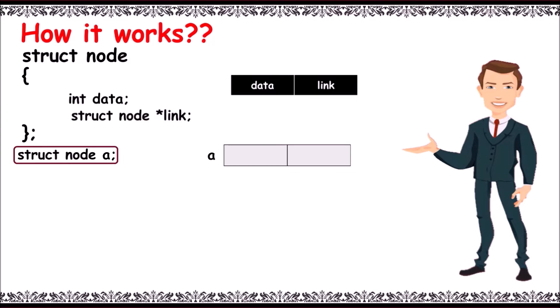Let's store 3 to a.data - the first field gets updated with 3. Then store null value in a.link - the second field will be null. Similarly, consider another node b.